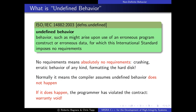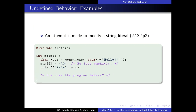One of the behaviors that are undefined in C++ is when an attempt is made to modify a string literal. A string literal is a literal constant—in this case, 'hello!!!' with three exclamation marks. This program attempts to modify the string literal by casting away constness and then writing to it, intending to remove two exclamation marks by inserting a null character. However, the behavior is undefined because string literals may be stored in read-only memory, and trying to write to read-only memory may result in an exception.